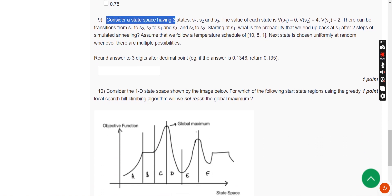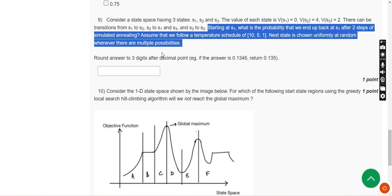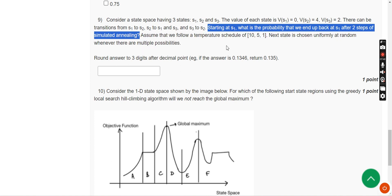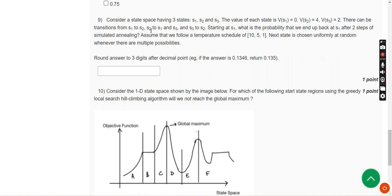Consider a state space having three states: S1, S2, and S3. The main question is: starting at S1, what is the probability that we end up back at S1 after two steps of simulated annealing? For the ninth question I have got the answer as 0.500, that means 0.5 or 1 by 2.